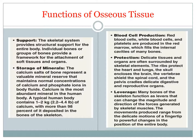The skeletal system also provides storage of both minerals and energy. The calcium salts of bone represent a valuable mineral reserve that maintains normal concentrations of calcium and phosphate ions in the body fluids. Calcium is the most abundant mineral in the human body. A typical human body contains one to two kilograms of calcium, with more than 98% of it deposited in the bones of the skeleton. There is also an energy reserve. As we age, our bones accumulate adipose tissue in the form of yellow bone marrow. This tissue can be used as an energy source during times of high energy demand.